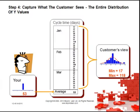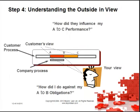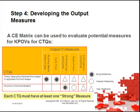Capture what the customer sees — it is the entire distribution of Y values or outputs. Understand the outside-in view: don't just look at your part of the process, look at the overall picture and how your part interacts and influences other parts. And develop your output measures — a cause and effect matrix can be used to evaluate potential measures for KPOVs and CTQs.